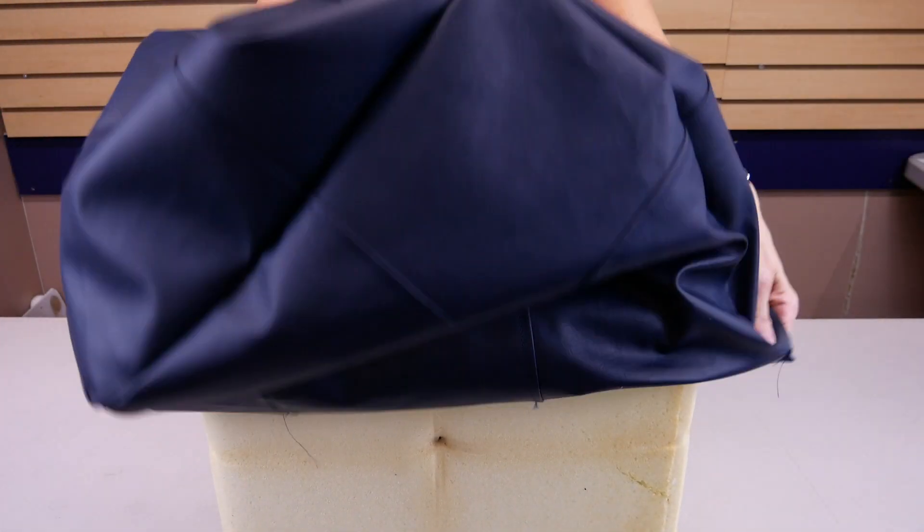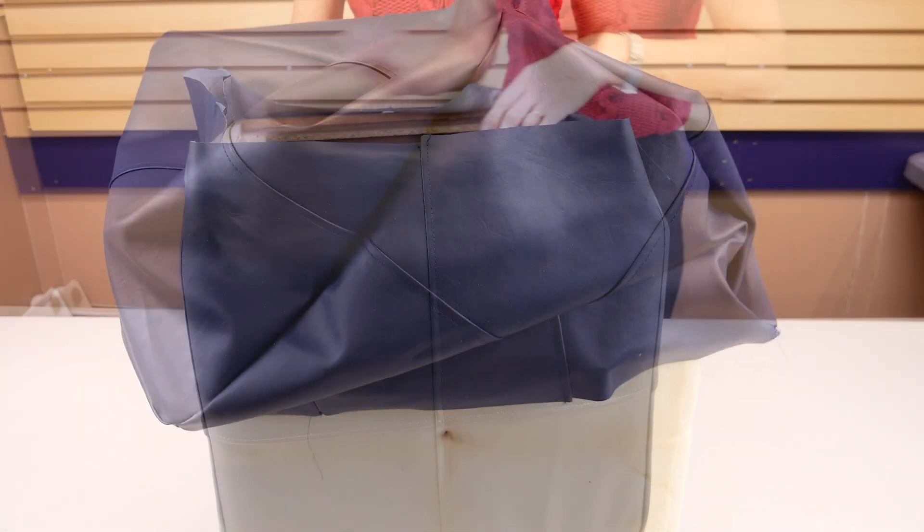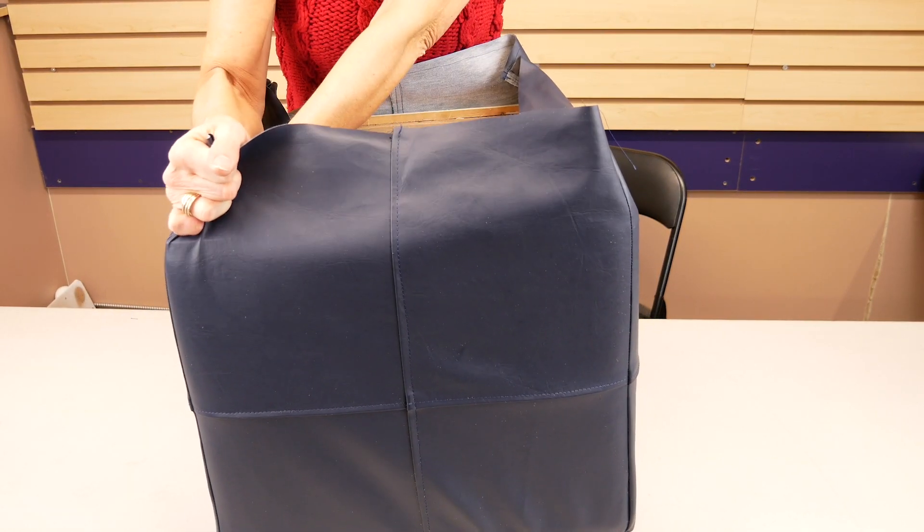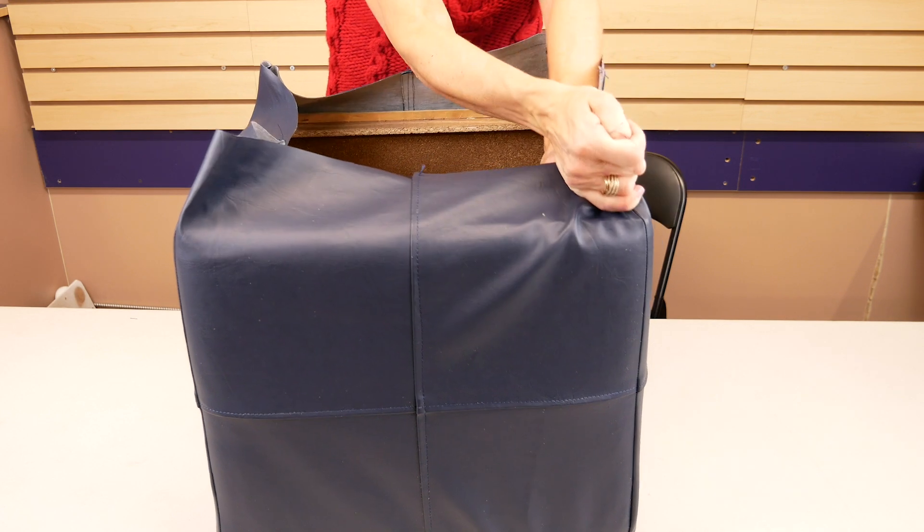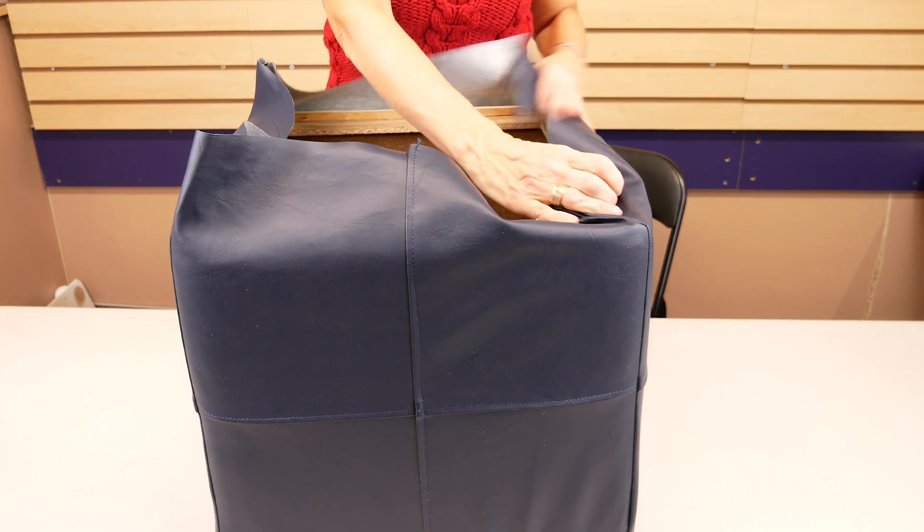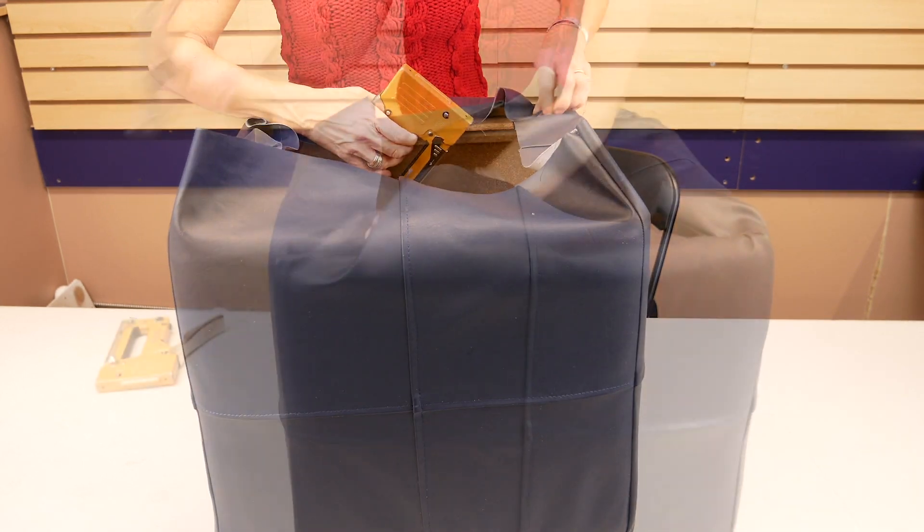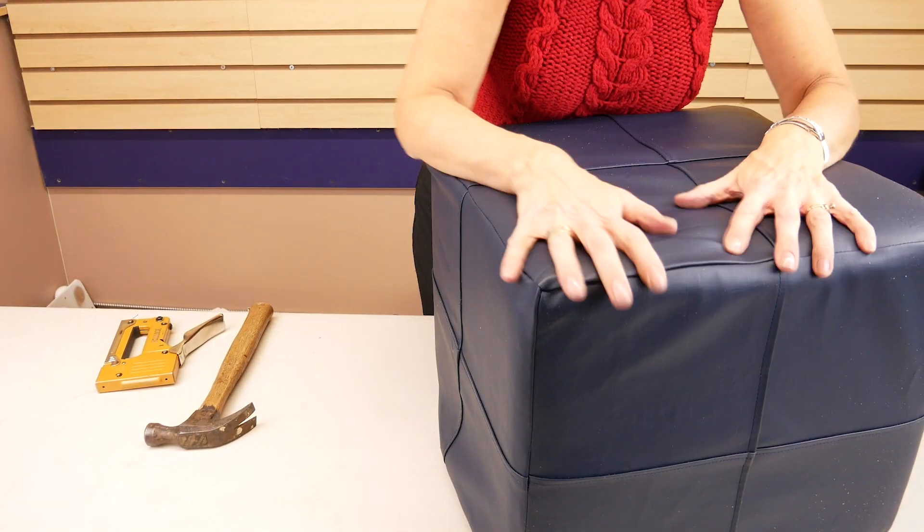Slip the cover over the ottoman and place the whole unit face down on a firm surface. Check to make sure your corners are lined up perfectly to the corners of the cube. Then pull down firmly and place one or two staples in each corner.